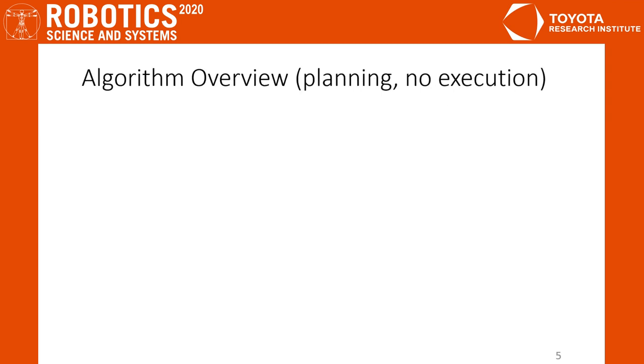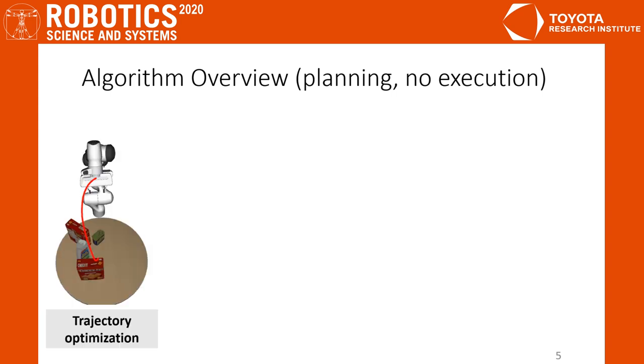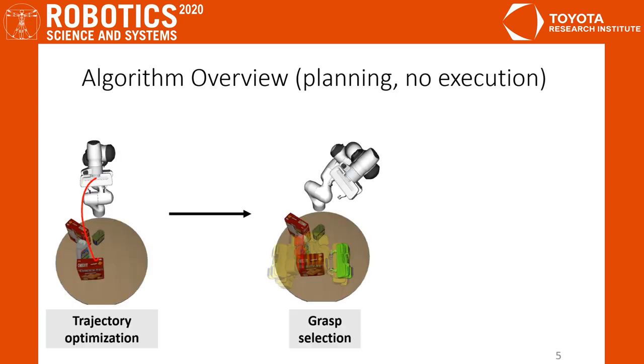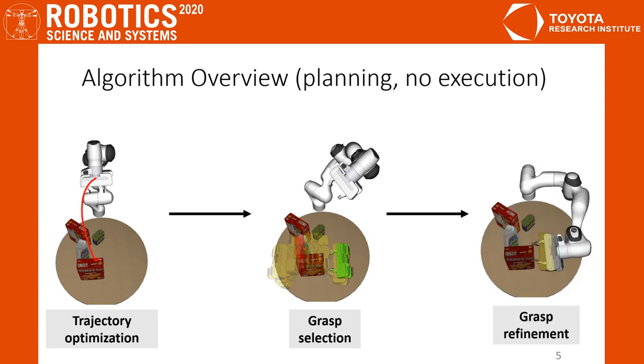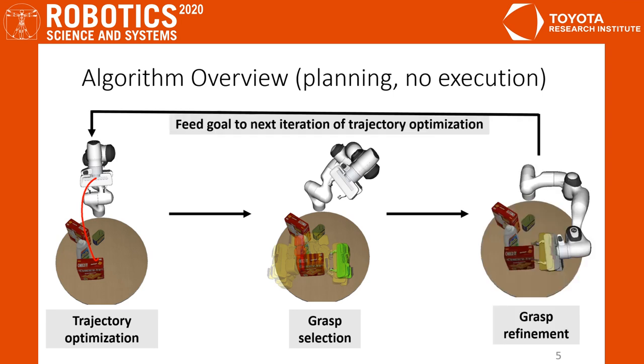We show an algorithm overview of our planner. For each planning iteration, we will optimize the motion for a target goal, select a potential new goal, and refine it for the next iteration. We run these optimization steps until convergence.